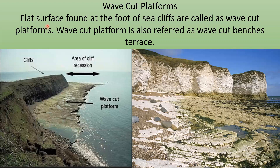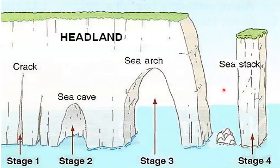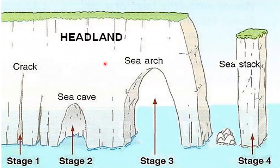Wave cut platforms. Flat surfaces formed at the foot of sea cliffs are called wave cut platforms, also referred to as wave cut benches or terraces. Looking at the picture, the action of waves creates cracks in the sea cliff at the headland. Further wave action enlarges the cracks, resulting in sea caves. When sea caves on both sides of the headland approach each other and a hollow is formed, this is called a sea arch. Further collapse of the sea arch by wave action results in a sea stack, and the remaining small eroded structure is called a sea stump.